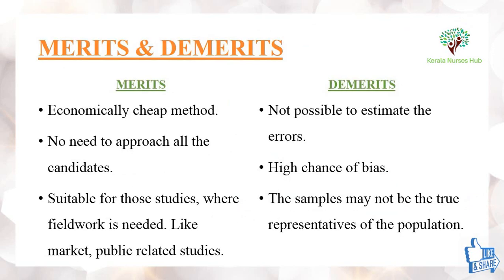The merits of quota sampling: it is an economically cheap method with no need to approach all candidates, and it is mainly suitable for studies where field work is needed, like market and public-related studies. The demerits are that there is a high chance of bias, the samples may not be true representatives of the population, and it is not possible to estimate the errors.